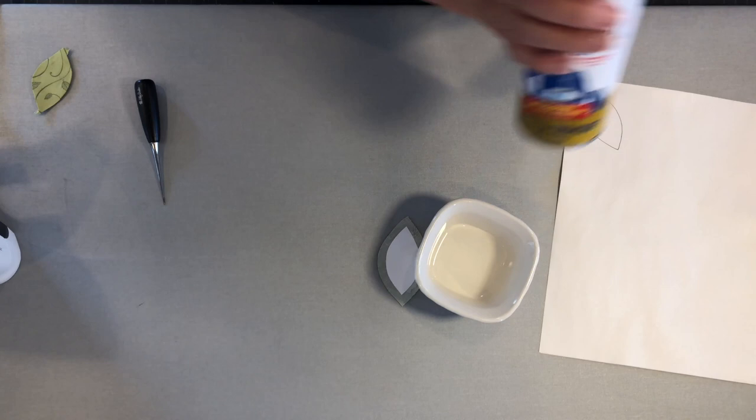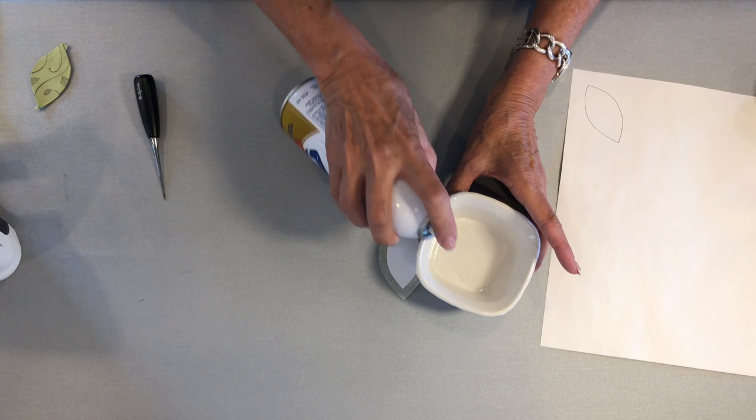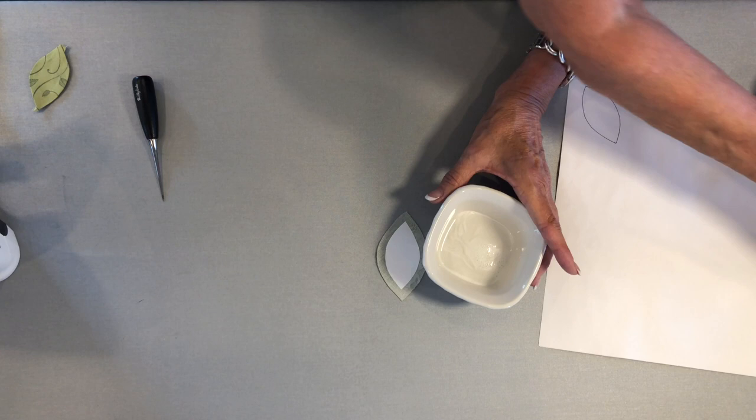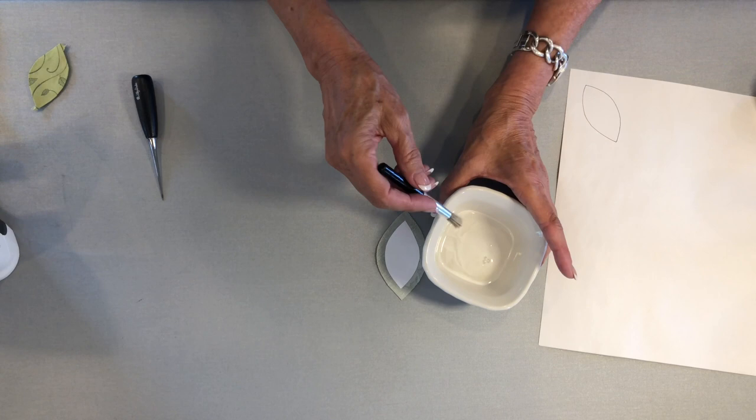I have in this little container some spray starch—just regular old spray starch. You can use any pressing agent and just spray it into your container. It will foam up if it's got no liquid in it because it's got air in it, but the air will fall out and then it'll just look like water.